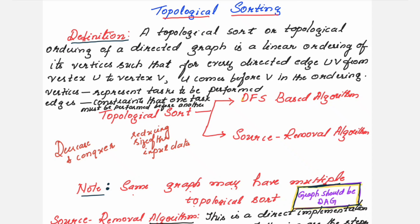This technique is similar to divide and conquer in that it breaks down a problem into smaller sub-problems, but the difference is that in decrease and conquer the size of the input data is reduced at each step. This technique is used whenever it is easier to solve a smaller version of the problem, and the solution to the smaller problem can be used to find the solution to the original problem.